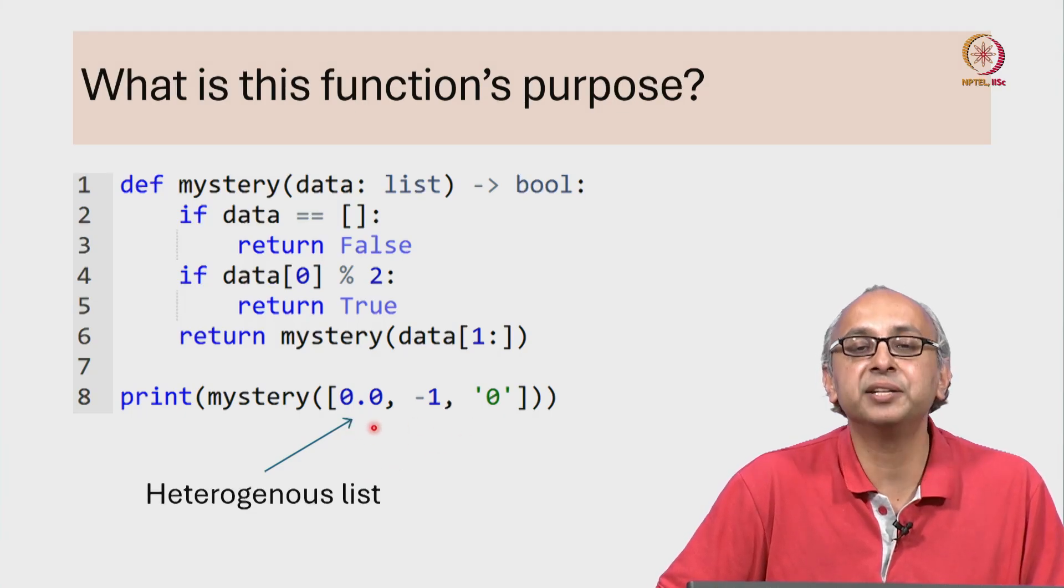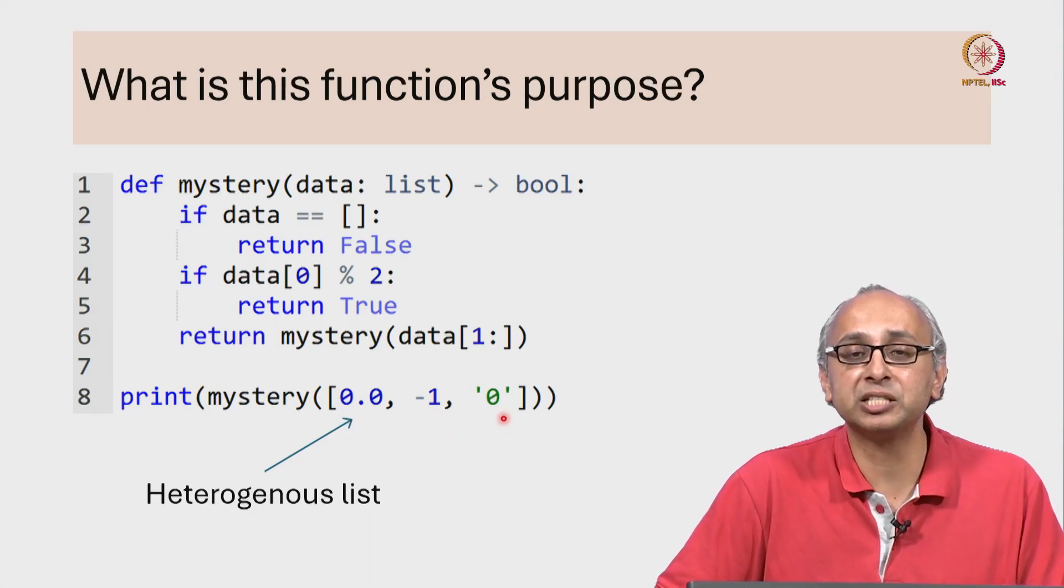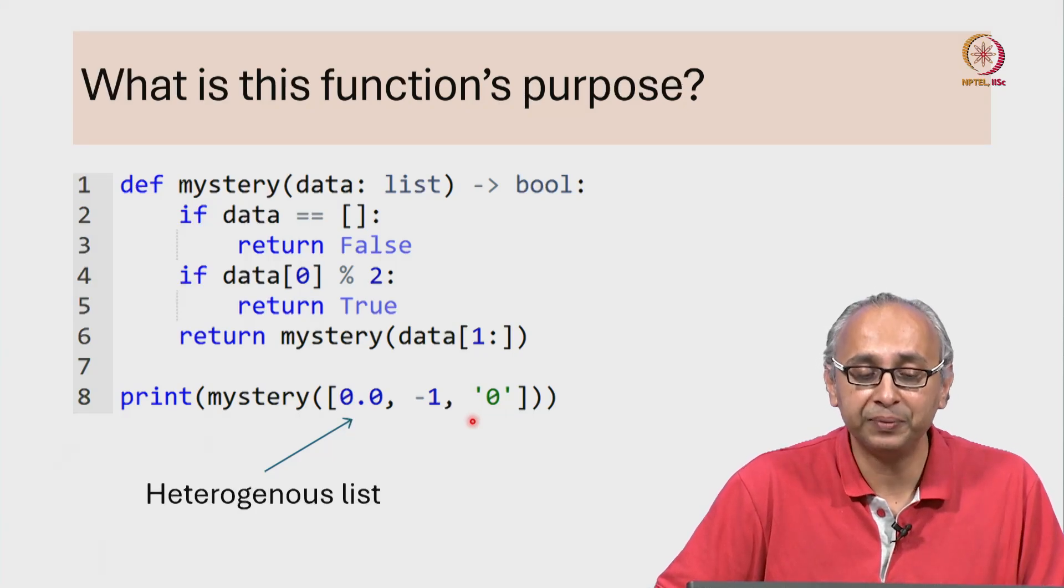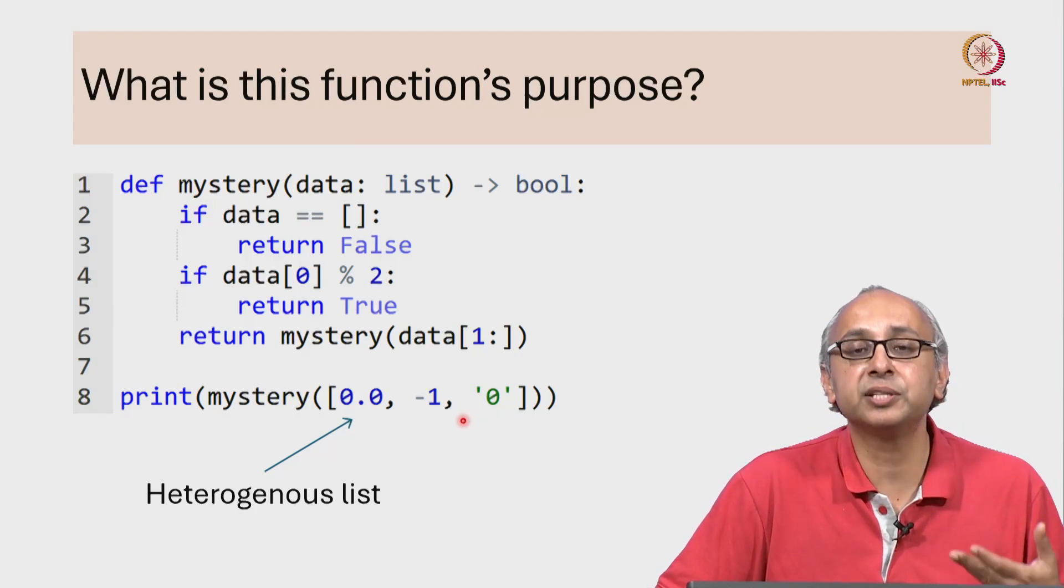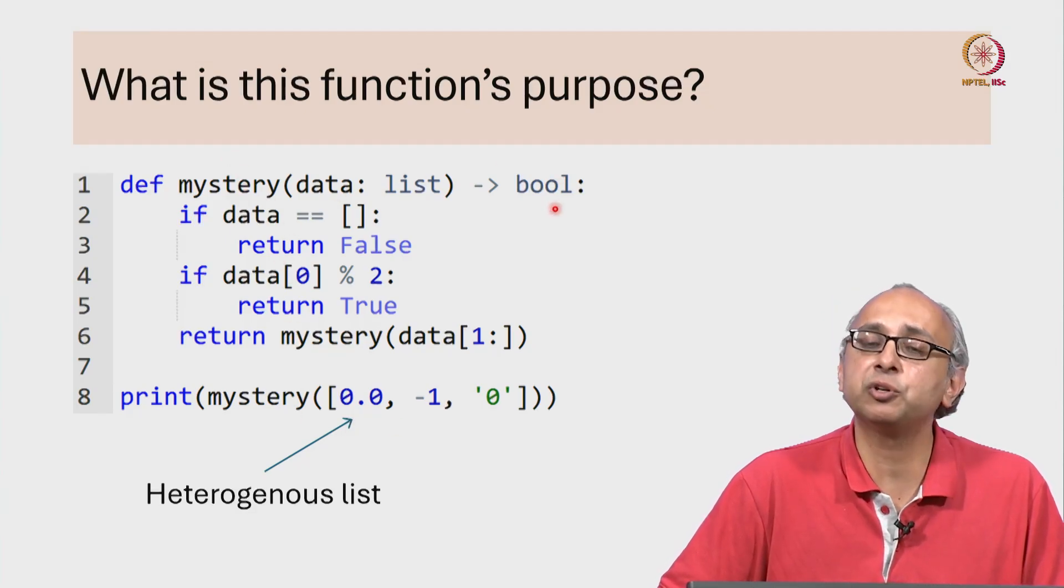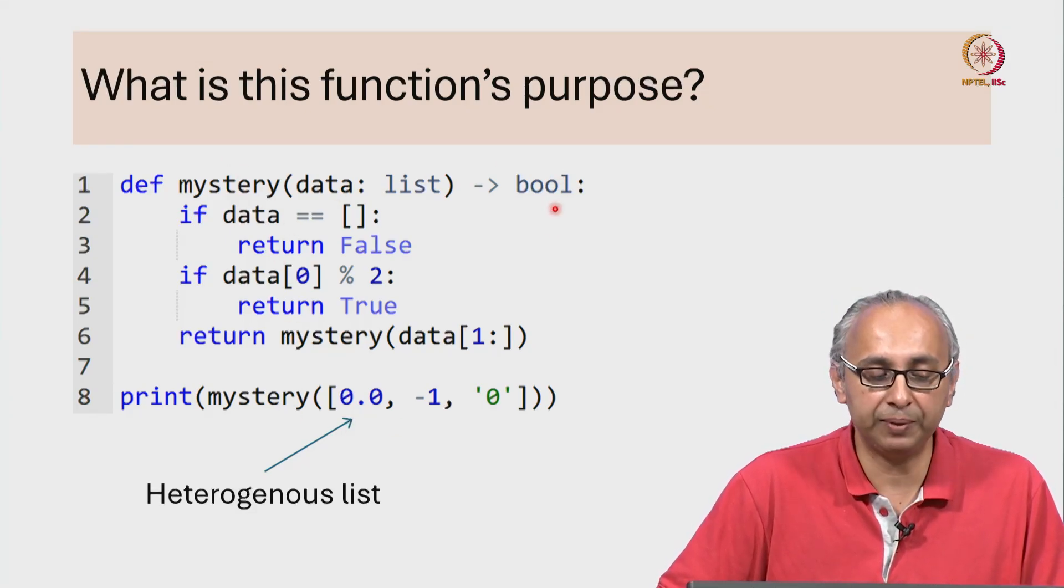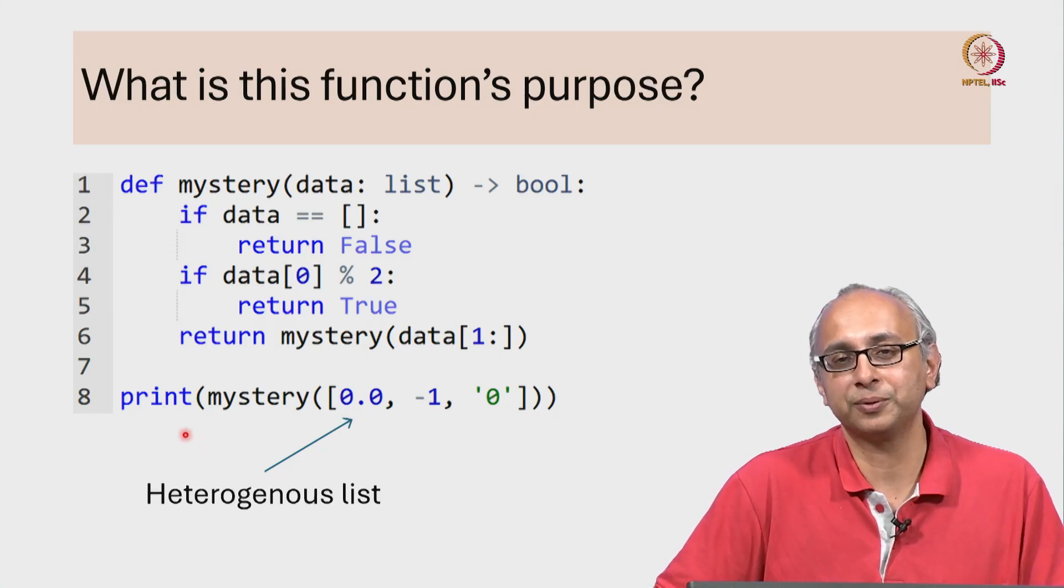The 0th item in this list is a float, the first item is an int, and the second item in this list of length 3 is a string. So I can pass this heterogeneous list to this mystery function and it's eventually going to return some Boolean and that Boolean gets printed out. So what is this function's purpose?